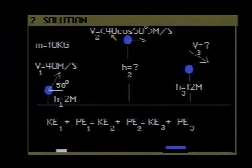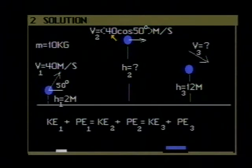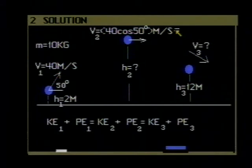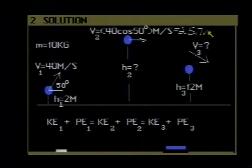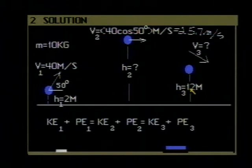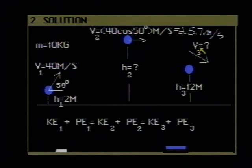The stone's velocity at maximum height equals its horizontal component only: 40 cosine 50 degrees, which is simply the original horizontal component of the velocity and does not change. That turns out to be 25.7 meters per second. When the stone goes over the castle wall, its height above the ground h3 is 12 meters, and its velocity at that point v3 is unknown.